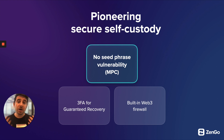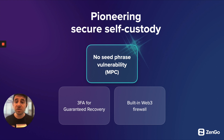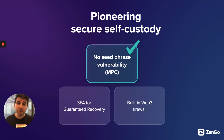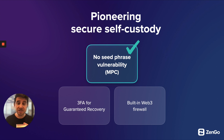That was part one — what it means to have no seed phrase vulnerability. If you're interested in a deep dive and more technical resources, go to zengo.com/security. You'll get access to white papers, audits, and our MPC cryptographic library on GitHub.